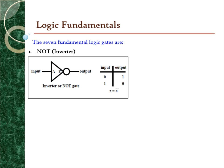Let us take a closer look at the NOT gate. The NOT gate is also called an inverter because it takes the value of the input and inverts it to the opposite state. That is why it is called a NOT gate — when the input is true, the output will not be true. This can be illustrated with the truth table for the NOT gate.